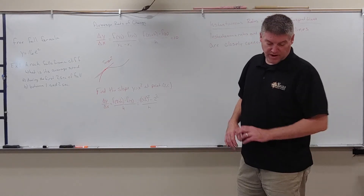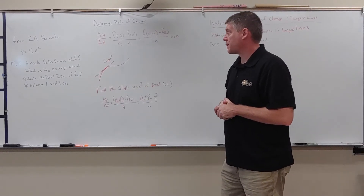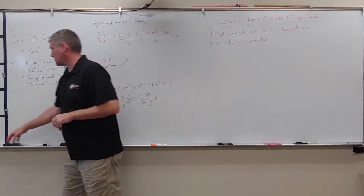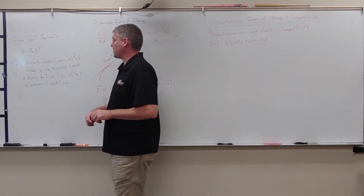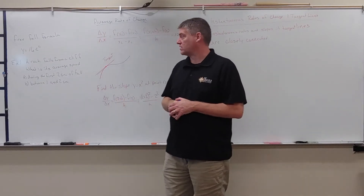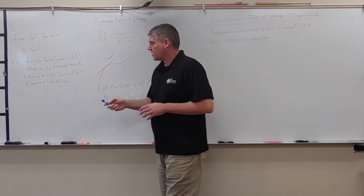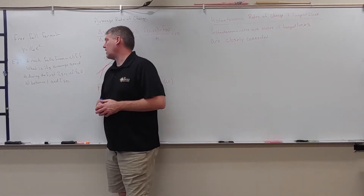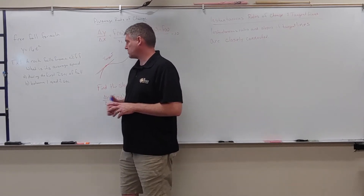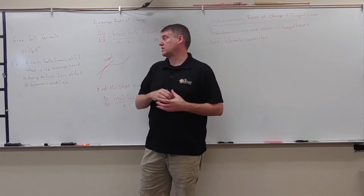We're going to talk about rate of change and tangents to curves. The first example we're going to look at is what happens if we have a free fall. They give you the equation y equals 16t squared, where t is time in seconds. When a rock falls from a cliff, what is the average speed during the first two seconds of fall, and what is the average speed between second one and second two?